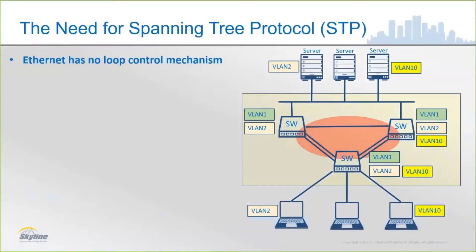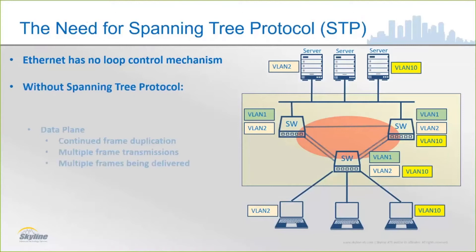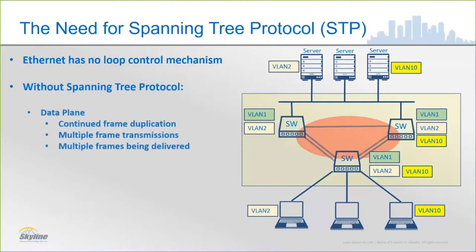Spanning Tree Protocol is a loop prevention mechanism, or a loop control mechanism. What Spanning Tree does by default is it manages what would eventually happen in an environment without any kind of management protocol relative to managing the redundancy.